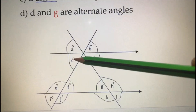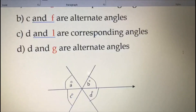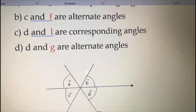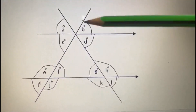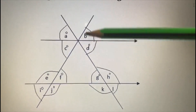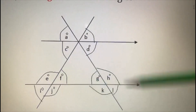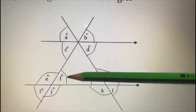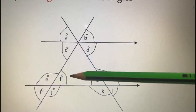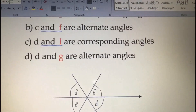Now you have to find which angle is alternate to C. Alternate angles — think about the letter Z. Start from here, draw Z — in this corner C is there, and in the other corner of the Z, angle F is there. So C and F are alternate angles.